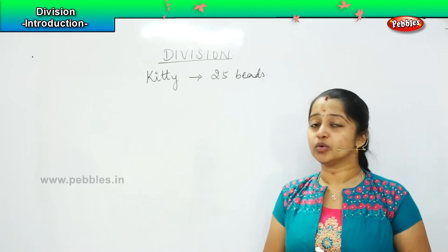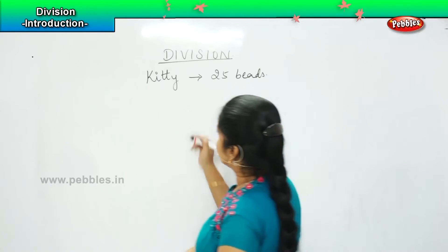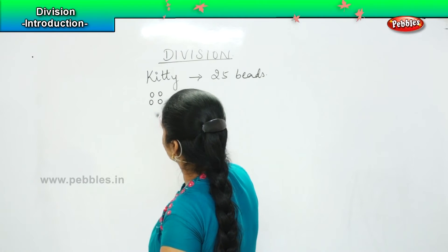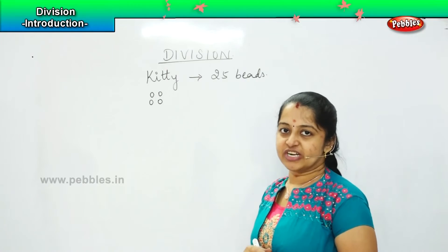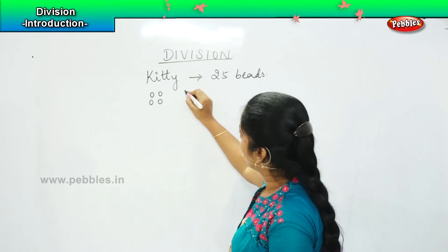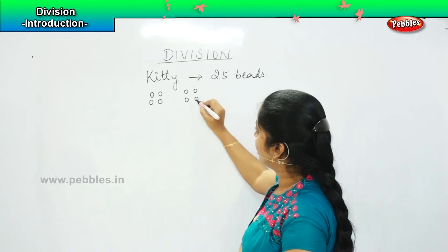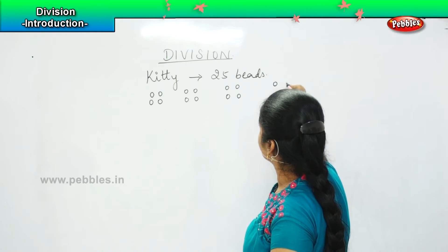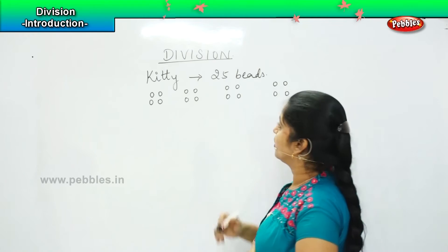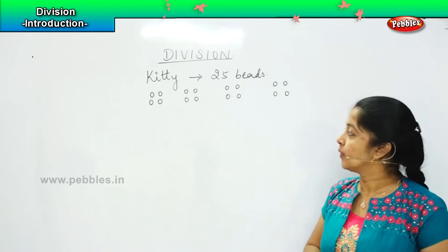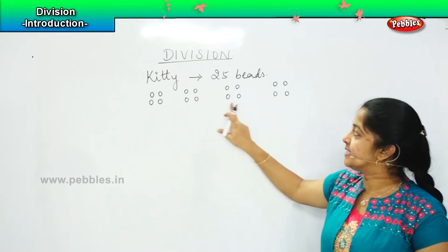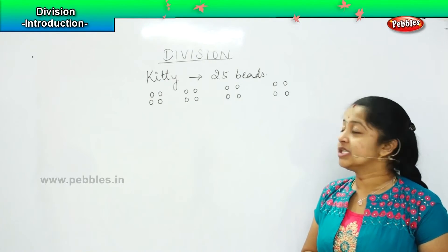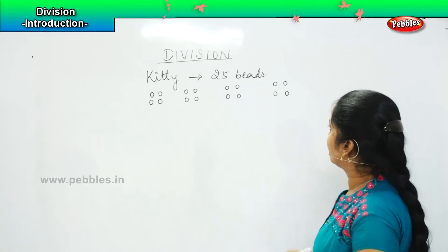So what will she do children? So now let us see. She will be splitting the 25 as 1, 2, 3, 4. First she will start with 4. Then 1, 2, 3, 4 again, and 1, 2, 3, 4, and 1, 2, 3, 4. So how many are there? So there are 4, 8, 12, 16. So 16 beads she has divided. So now she has 9 more beads to do.